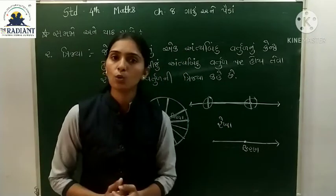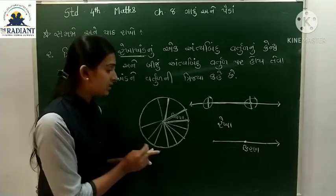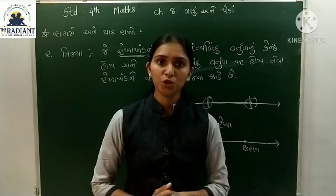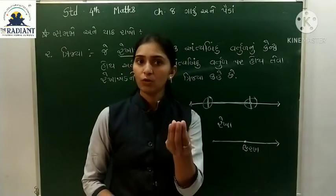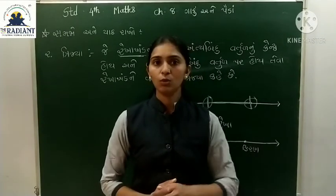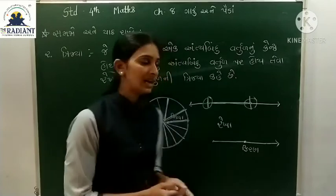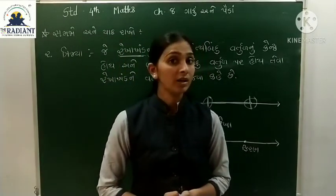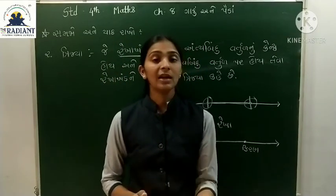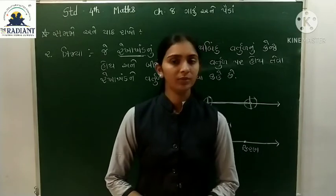ત્રિજ્યા નું માપ ચોક્કસ, એટલે કે સમાન હોય છે. આપણે ત્રિજ્યા ઉપર અમુક સેન્ટીમીટર માપીએ છીએ - જેમ કે 5 સેમી નું વર્તુળ દોરવું છે, એટલા સેમી ની ત્રિજ્યા હોય. ત્રિજ્યા નું માપ કેવું હોય? વર્તુળ ગોળ છે, એની ત્રિજ્યા એક સમાન હોય છે. આટલું આજે. આવતા વિડિઓ માં ફરી મળીશું - ત્યાં સુધી.